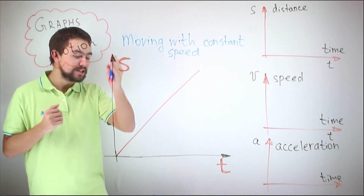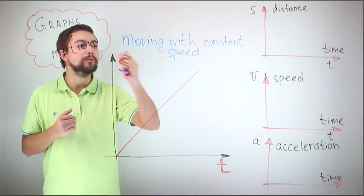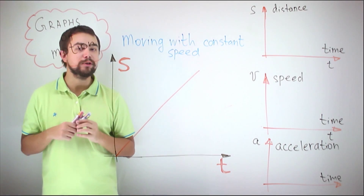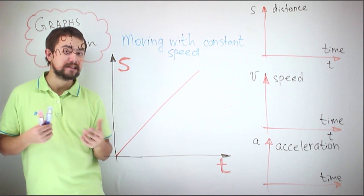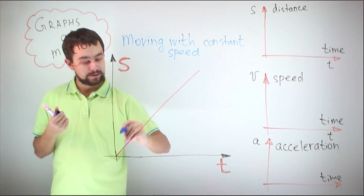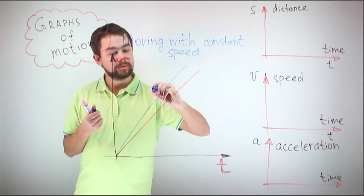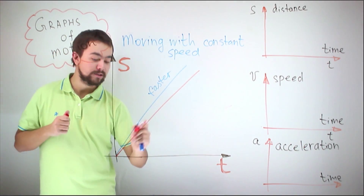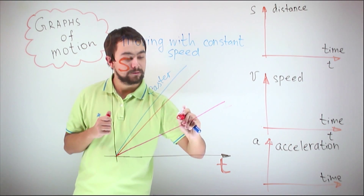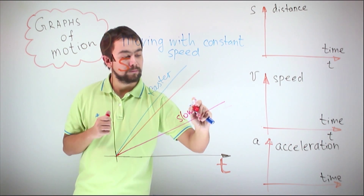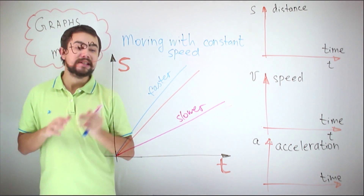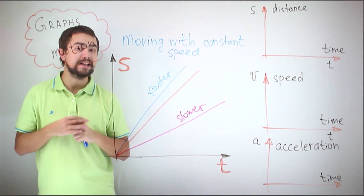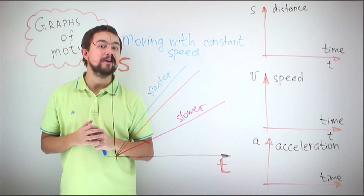We start with the distance-time graph for a body moving with constant speed — we see it is a straight line. If the body moves faster, the graph would look like this. For a slower constant speed, the graph will look like this. The gradient defines the speed of motion; in fact, as we will see later, gradient is equal to the speed of motion.